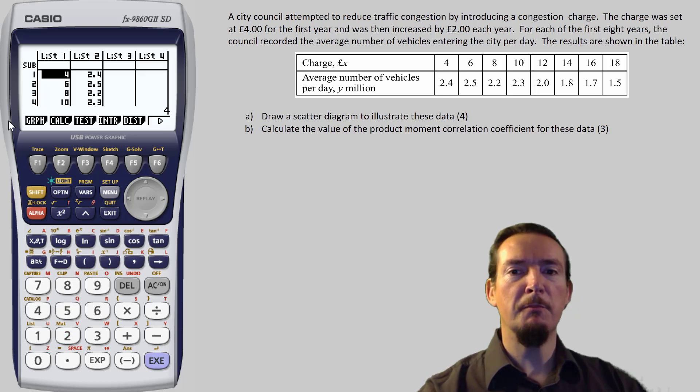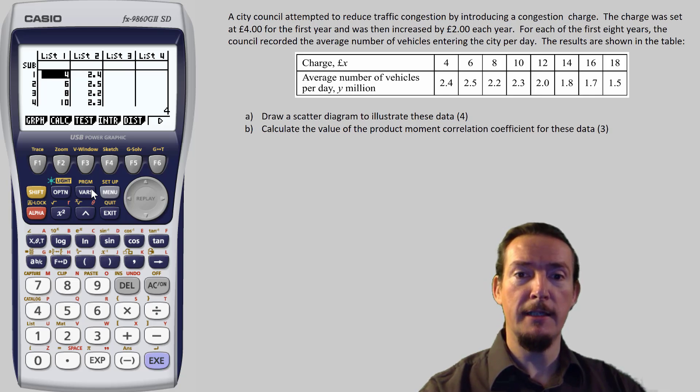This brings up this screen, which has multiple columns to enter lists of data. This time, because we have bivariate data, we need two lists to hold our values from the data table.